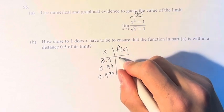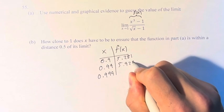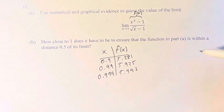We can see that f of x is equal to 5.281, 5.925, and 5.992. These values are getting closer and closer to 6.